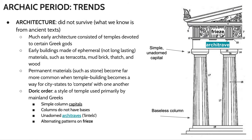In terms of architecture, basically all architecture from the Archaic period did not survive. Most of what we know about architecture from this period comes from ancient texts, which indicate that early architecture consisted of temples devoted to Greek gods. These temples were made of ephemeral, not long-lasting materials like terracotta, tufa — a sort of crumbly volcanic stone — mud brick, wood, and thatch. These materials don't last long, especially in a Mediterranean climate that tends to get very hot, so over time these buildings have disintegrated.